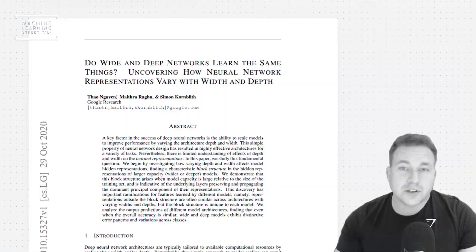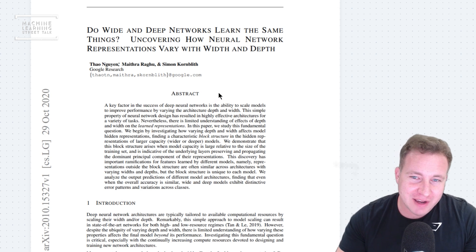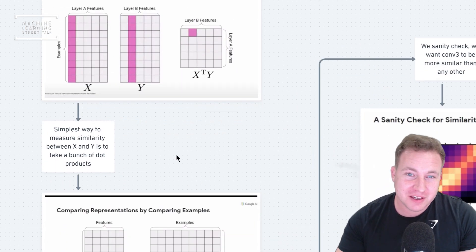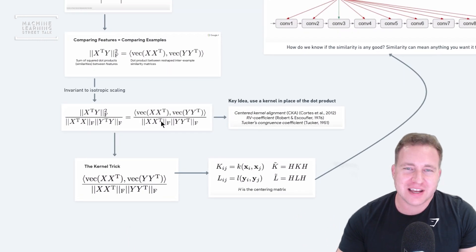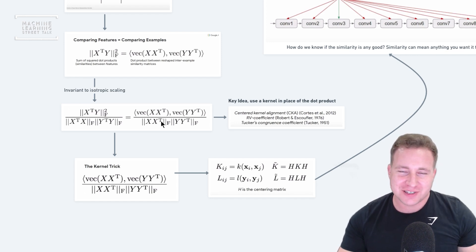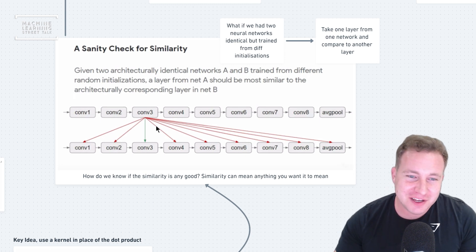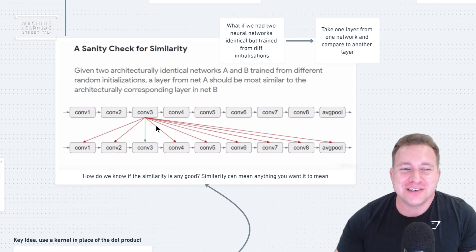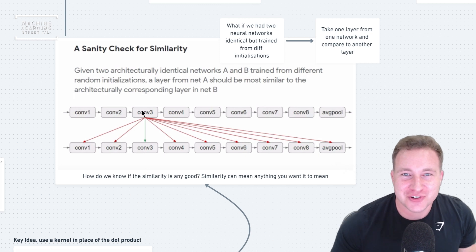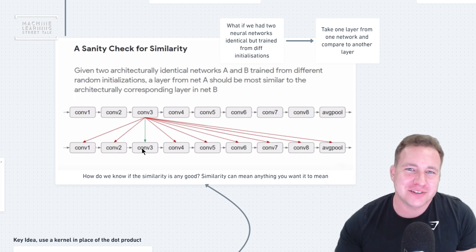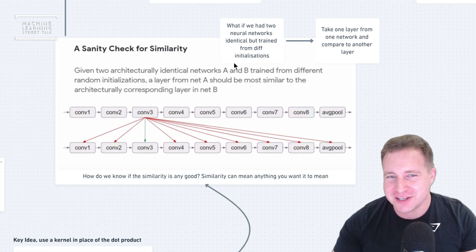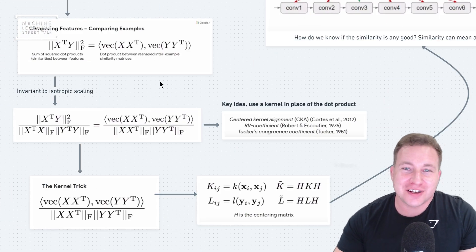People often try to anthropomorphize neural networks — they relate whatever neural network they've built back to a brain and say it works like the brain, but it doesn't. Simon was involved in the paper 'Do Wide and Deep Networks Learn the Same Things? Uncovering How Neural Network Representations Vary with Width and Depth.' He pioneered a fascinating way of comparing representations by comparing features, using a similarity function to compare representations across layers within a network or between different networks.